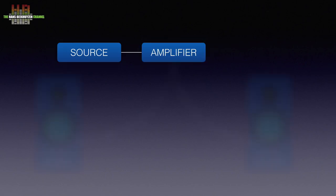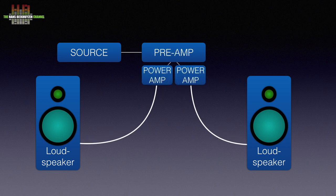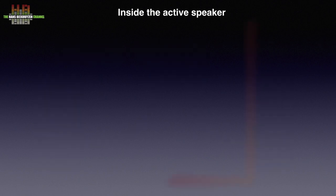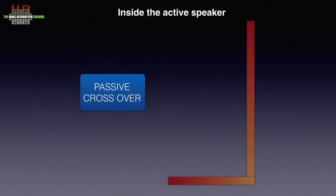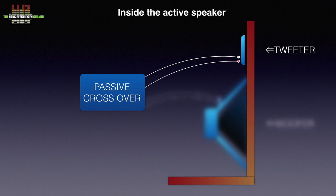A normal stereo is comprised of a source, an interconnect, an amp, loudspeaker cables and loudspeakers. Instead of an integrated amplifier, a pre-amplifier and one stereo or two mono power amplifiers can be used. Each speaker then consists of a cabinet, a crossover network and two or more loudspeaker chassis.